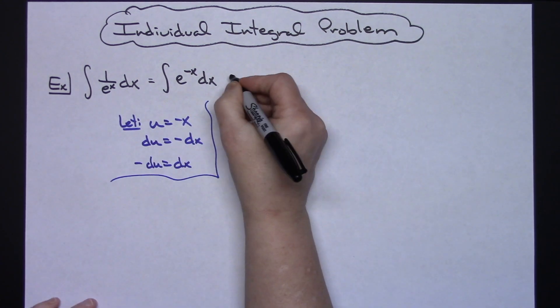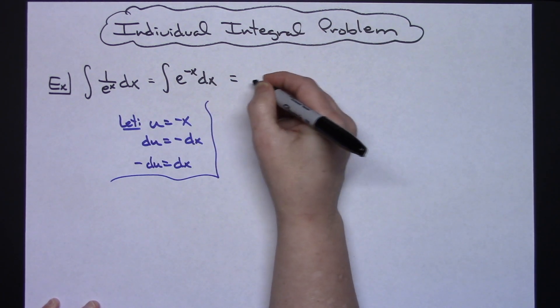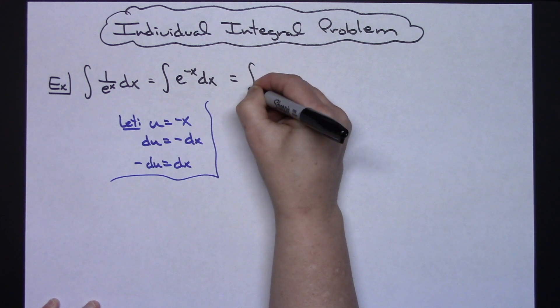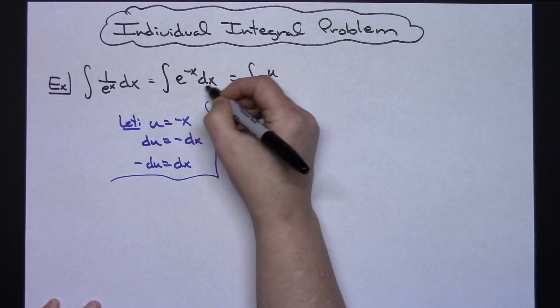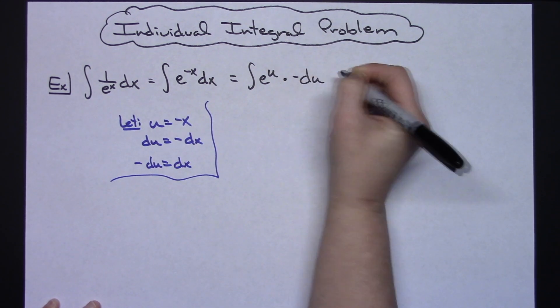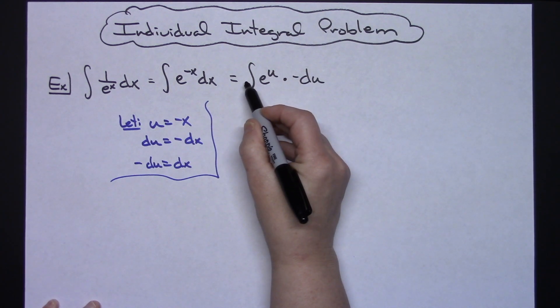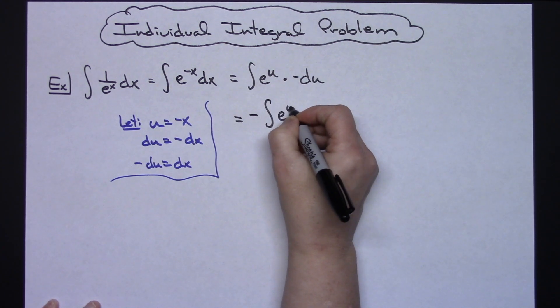I'm going to come back up here to my original integral and substitute u for that negative x. So I'm going to have the integral of e to the u. I'm going to substitute the dx for negative du. That's going to allow me to pull the negative out in front of my integral. So negative integral of e to the u du.